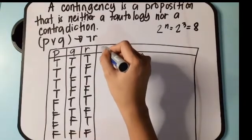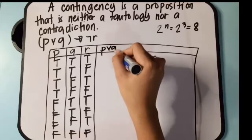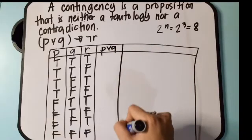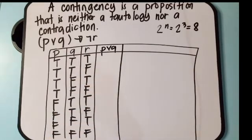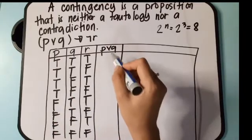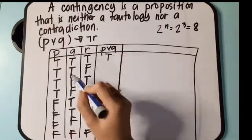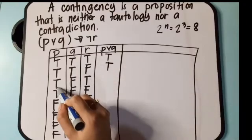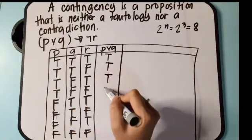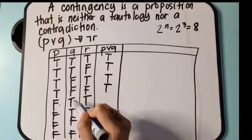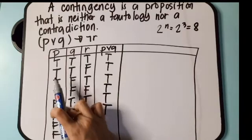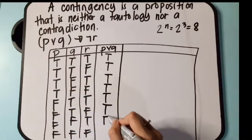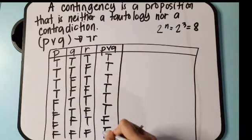First, let's compute the disjunction of P and Q. Using only the P and Q columns: true or true is true, true or true is true, true or false is true, true or false is true, false or true is true, false or true is true, false or false is false, false or false is false.